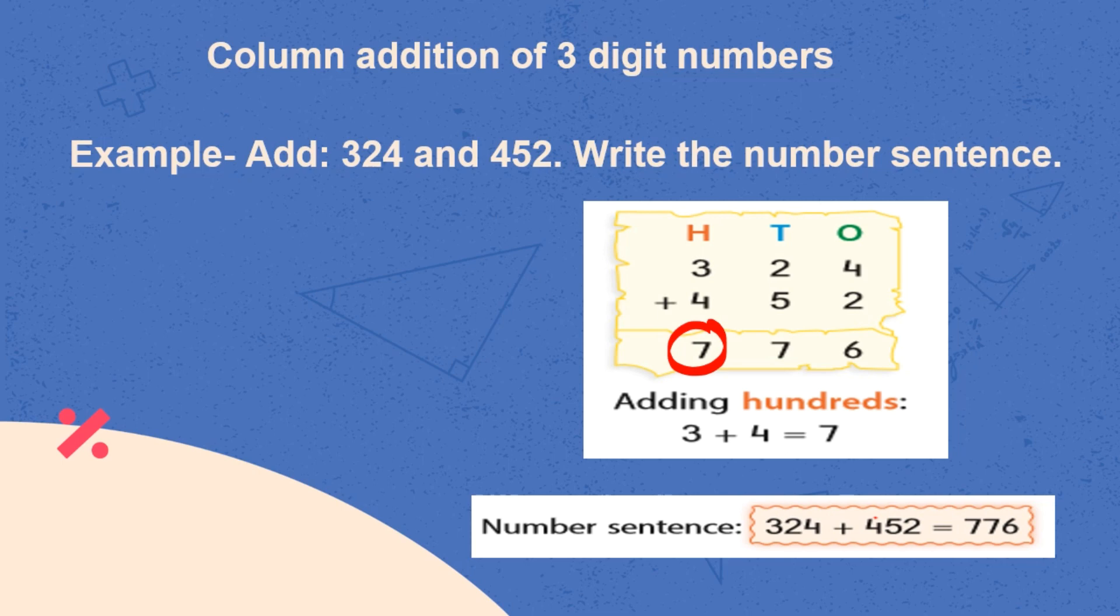Here you can see how we represent Addition of 2 numbers 324 and 452 in number sentence.